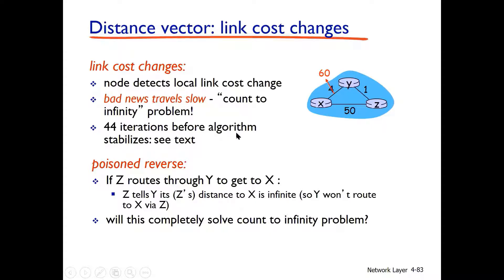If the cost decreases, three iterations will solve it. But if it increases, there will be 44 iterations. For example, if we go from 60, we have further to go — for R, and for less than three steps. We can see there are many iterations. It will count to infinity — that is the only problem.